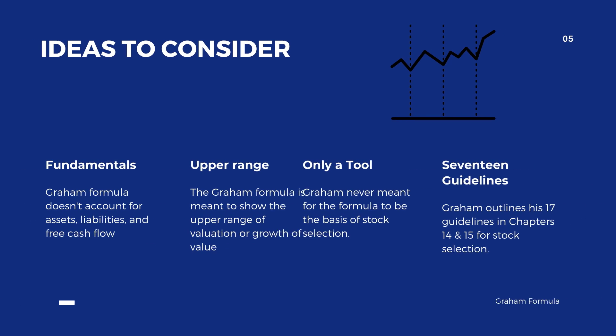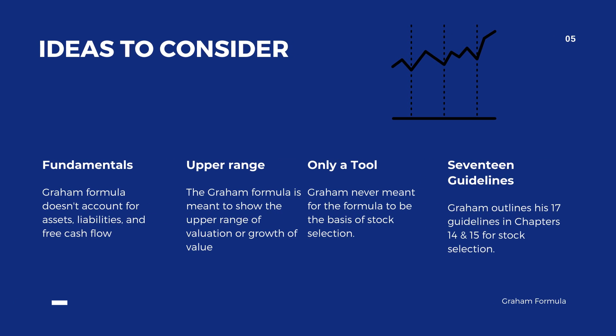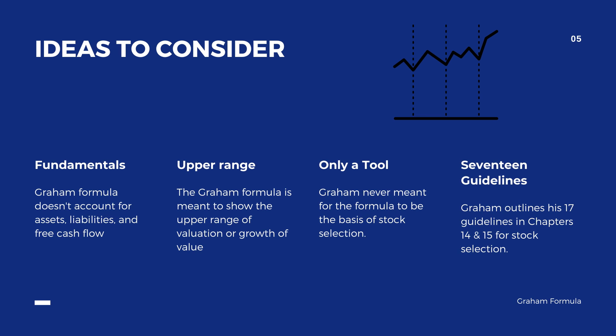Some ideas to consider regarding fundamentals: the Graham formula doesn't account for assets, liabilities, and free cash flow. It's also the upper range that the Graham formula is meant to show for evaluation of growth of value, and it's only meant to be used as a tool. Graham never meant for the formula to be used as the basis of stock selection. Rather, he established 17 guidelines, outlined in chapters 14 and 15 of his book, for stock selection for both defensive and enterprising investors.